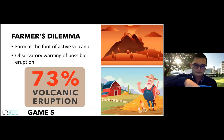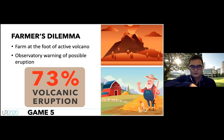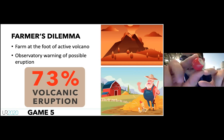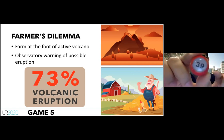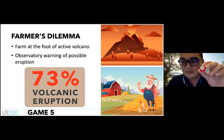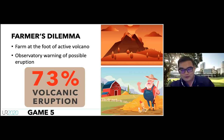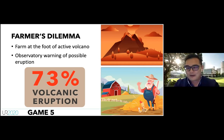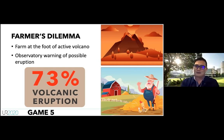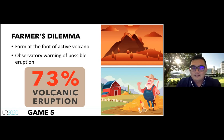I drew bingo ball number 39 — the event happened. The volcano erupted. Those who evacuated are safe; those who stayed did not survive. This is the core scenario of Two Farm Too Furious.